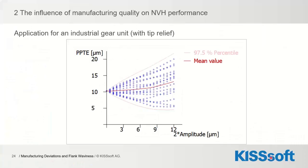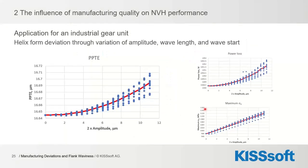The same analysis for helix form deviation, with variation over amplitude, wavelength, and wave start, shows that helix form deviation is much less sensitive than profile form deviation. In this example, the peak-to-peak transmission error changes from 16.65 to 16.71 — basically nothing. Power loss is very, very small. Hertz stress also increases, but less — still about 200 N/mm² at maximum amplitude.